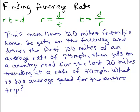So here's our problem. Tim's mom lives 120 miles from his home. He gets on the freeway and drives the first 100 miles at an average rate of 75 miles per hour, then gets on a country road for the last 20 miles traveling at a rate of 40 miles per hour. What is his average speed for the entire trip?